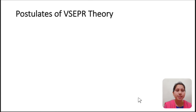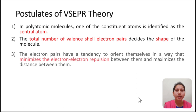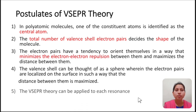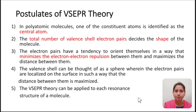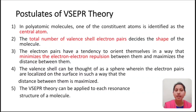Now what are the postulates of VSEPR theory? In polyatomic molecules, one of the constituent atoms is identified as the central atom. The total number of valence-shell electron pairs decides the shape of the molecule. The electron pairs have a tendency to orient themselves in a way that minimizes electron-electron repulsion between them and maximizes the distance between them. The valence shell can be thought of as a sphere wherein the electron pairs are localized on the surface such that the distance between them is maximized. The VSEPR theory can be applied to each resonance structure of a molecule.